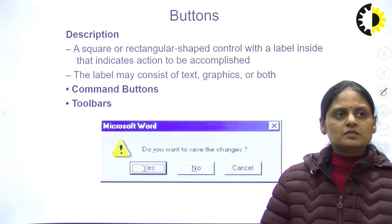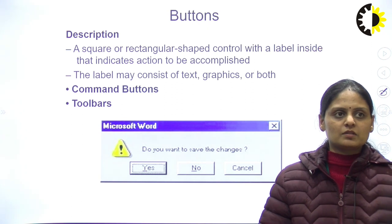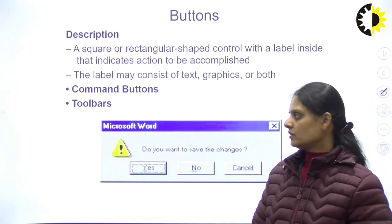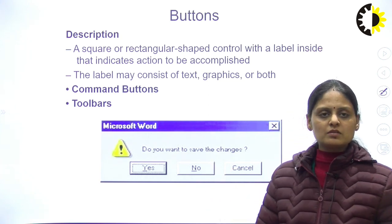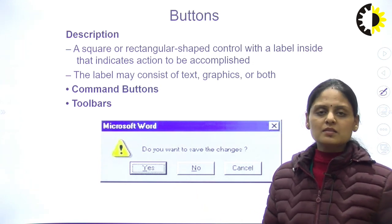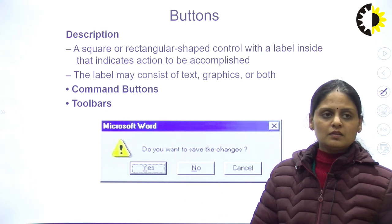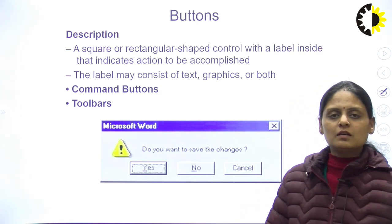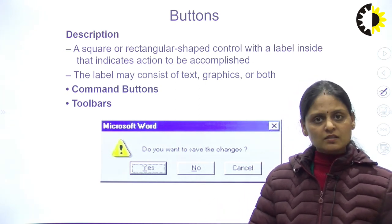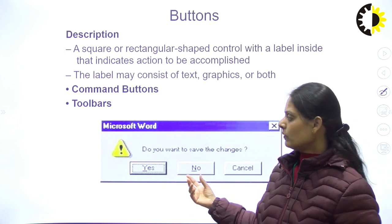A button is a square or rectangular-shaped control with a label inside that indicates the action to be accomplished. As we can see on the screen, this is a warning window asking if you want to save the changes, and there are three buttons: Yes, No, and Cancel. The user needs to select one of them. These are rectangular in shape and have a label on them. The label may consist of text, graphics, or both.